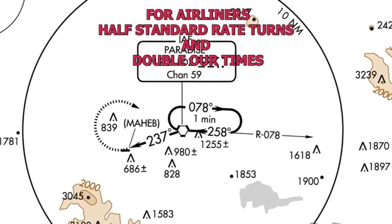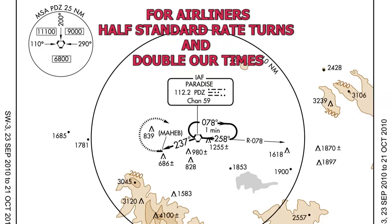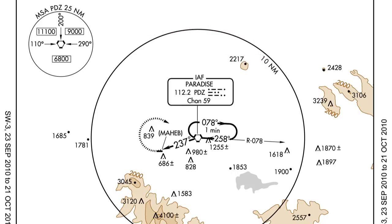Remember that for airliners, we do half standard rate turns and double our times. Instead of flying one minute out and doing a standard rate turn, we overfly the VOR, fly out for two minutes, do a half standard rate turn, and then come back to intercept the heading of 258 to the Paradise VOR. Corona is not a realistic airliner example, but you get the idea.